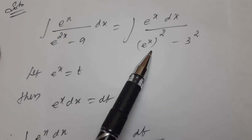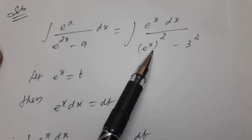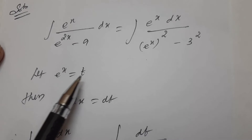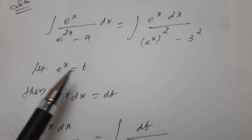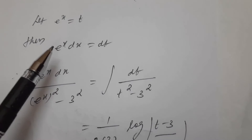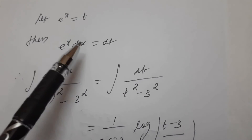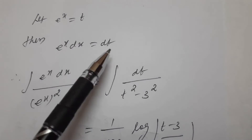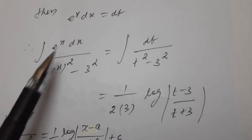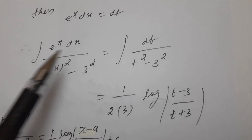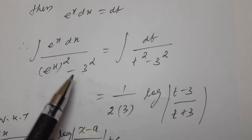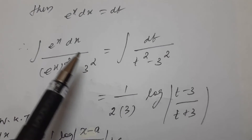So now let e power x equal to t. Differentiate e power x: so e power x dx becomes dt. Therefore, integration of e power x dx divided by e power x whole square minus 3 square.